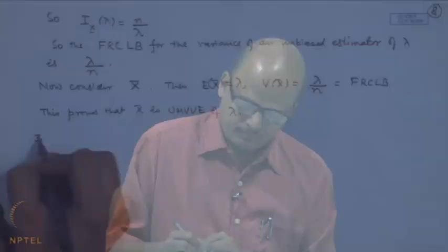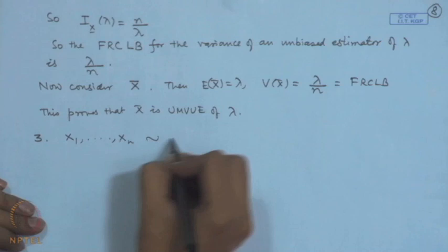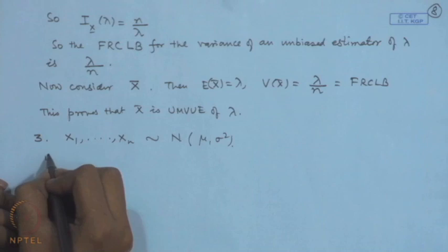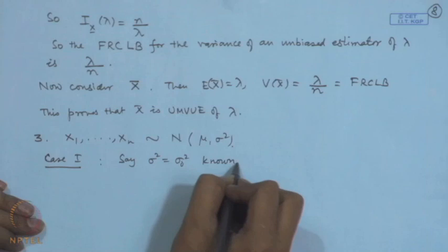Let us take another popular example: the normal distribution. Let x₁, x₂, ..., xₙ follow Normal(μ, σ²). We will consider different cases. First, say σ² = σ₀², that is, σ² is known. In that case we want the UMVUE of μ.